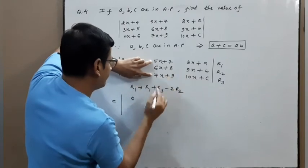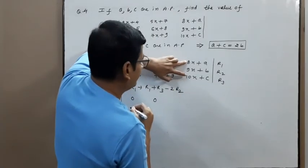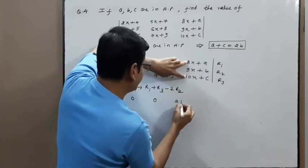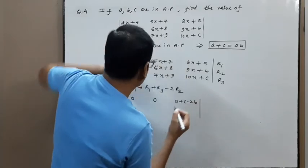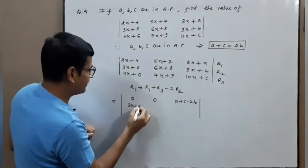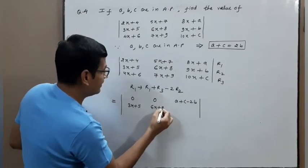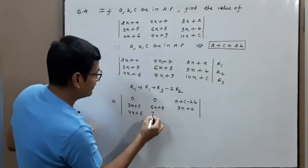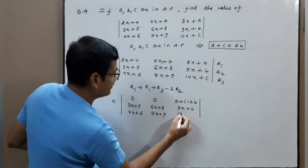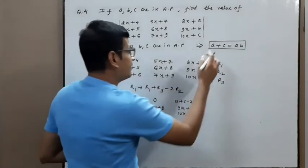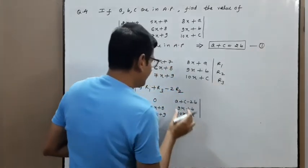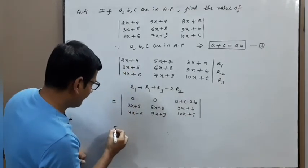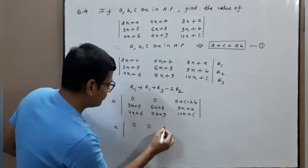The first row becomes: 0, 0, (a+c−2b). Other rows remain as is: row 2 is 3x+5, 6x+8, 9x+b and row 3 is 4x+6, 7x+9, 10x+c. But since a, b, c are in AP, a+c = 2b, so a+c−2b = 0. Therefore the first row becomes 0, 0, 0.